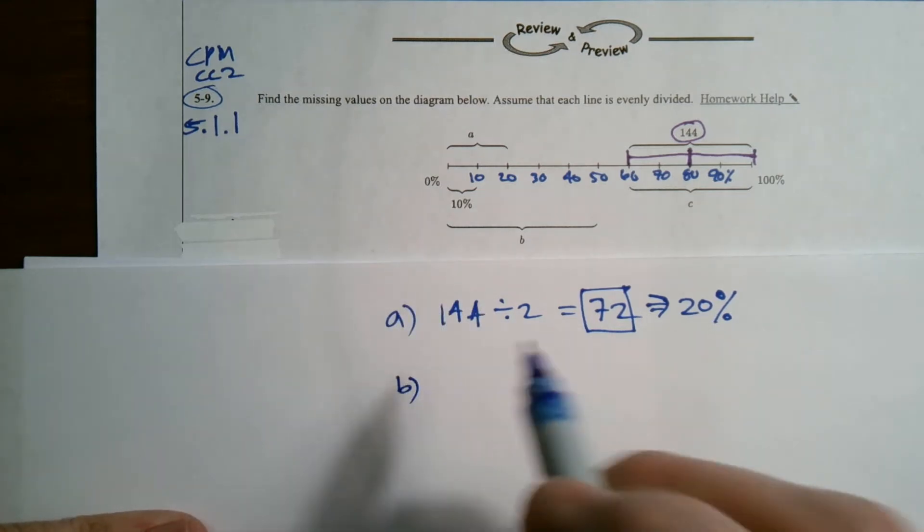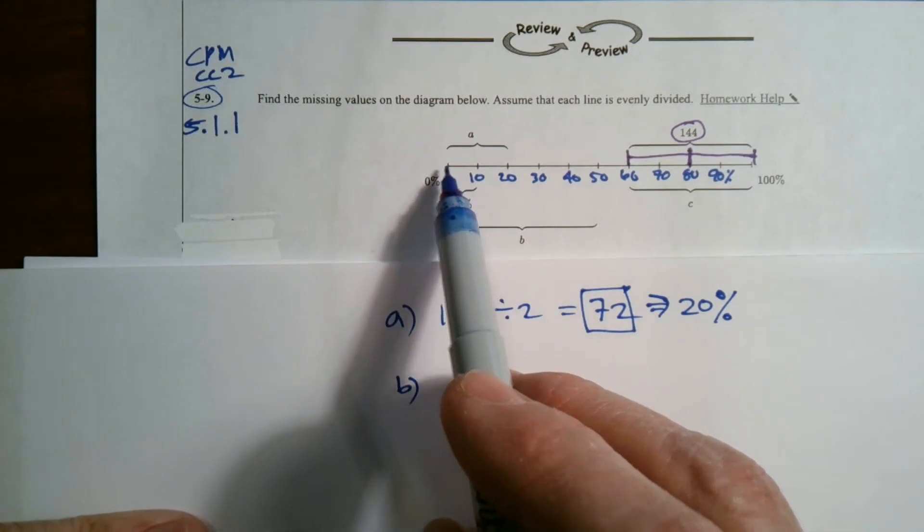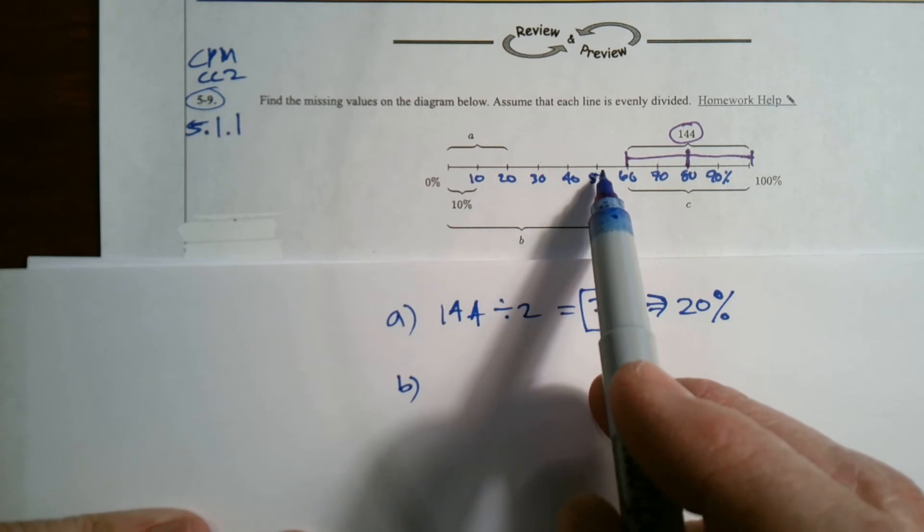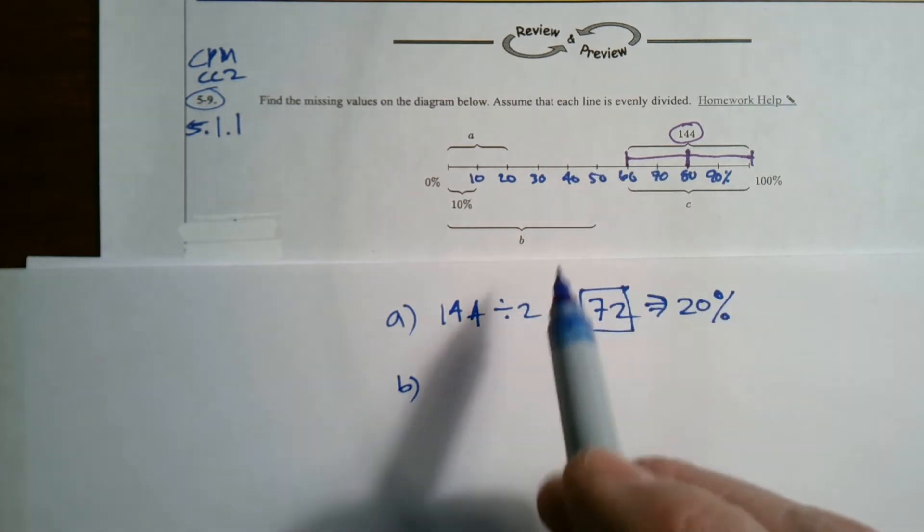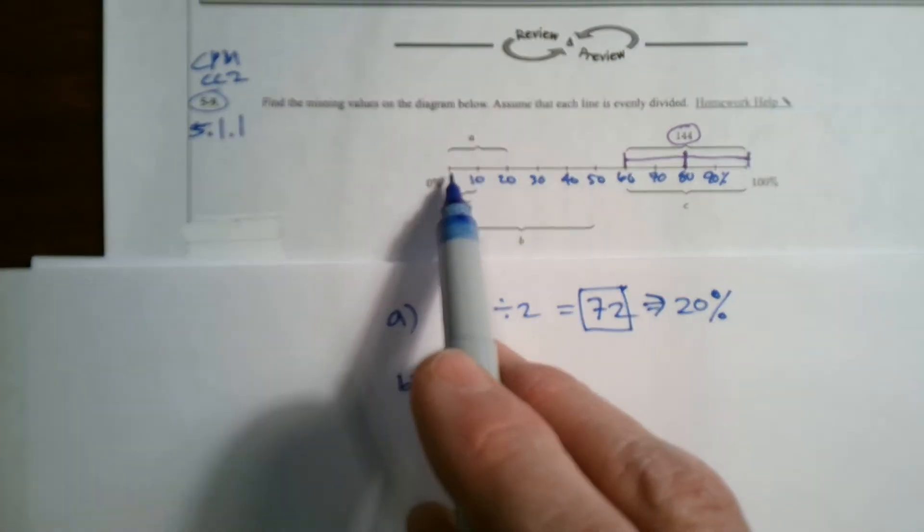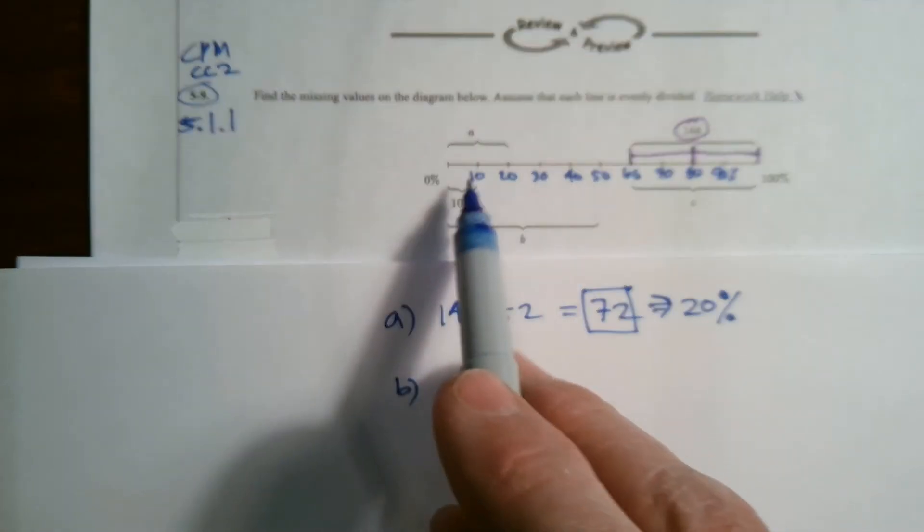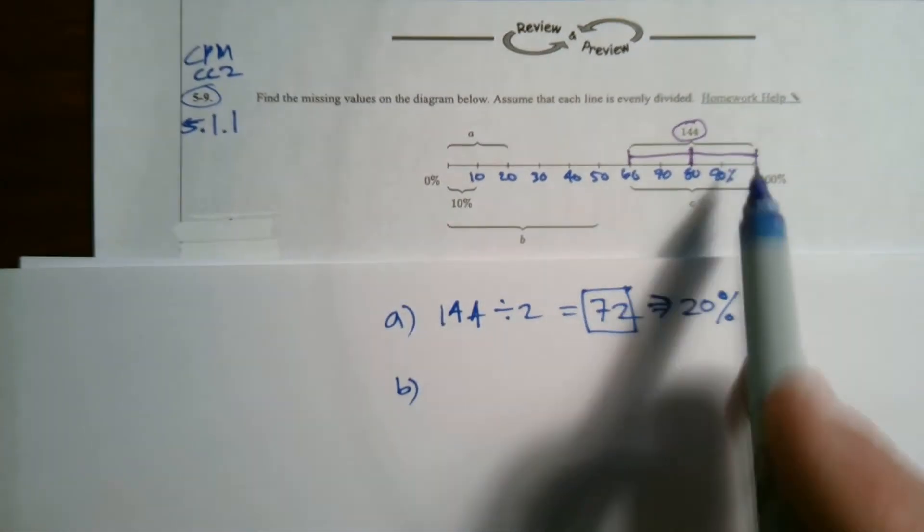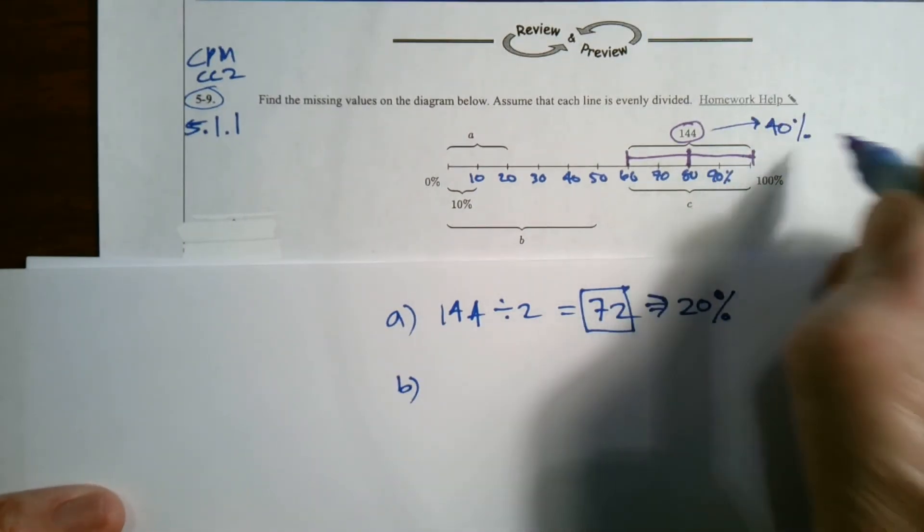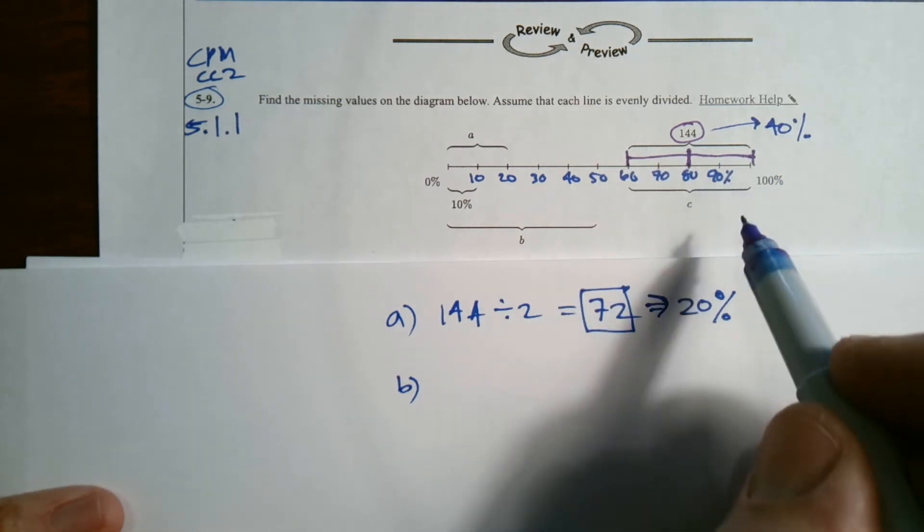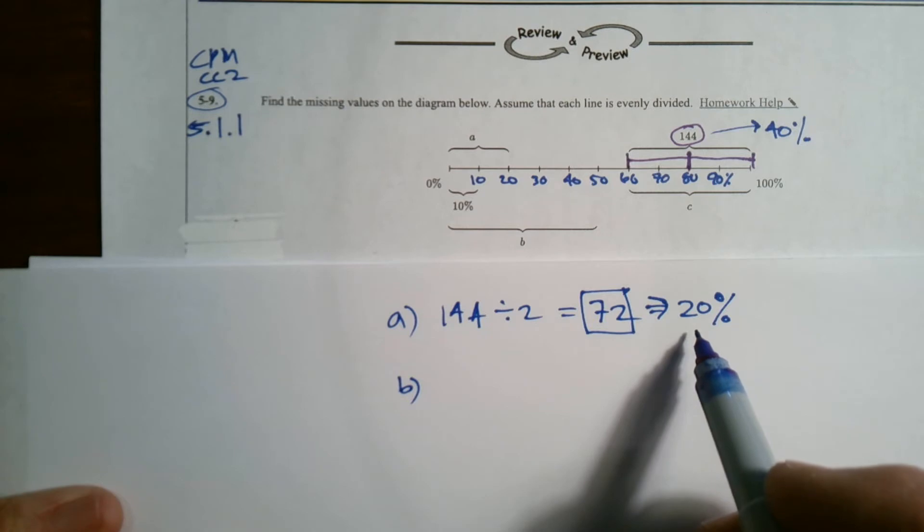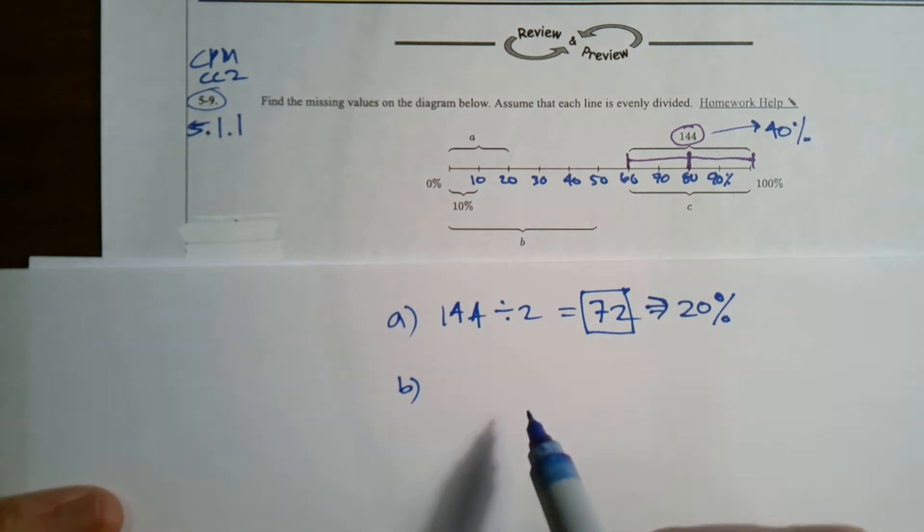So B, if I look at B, I'm going to go from zero to 50. That's what I have here, zero to 50 percent. Well, I know that from zero to 50, I know that 20 already. I know 40 percent right here. This is 40 percent. 144 is 40 percent. I know 72 is 20 percent. So I need 50 percent.